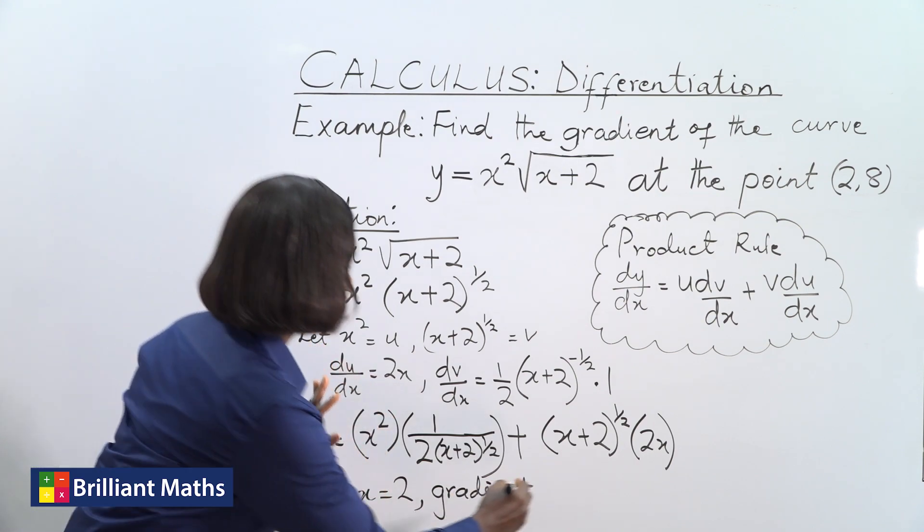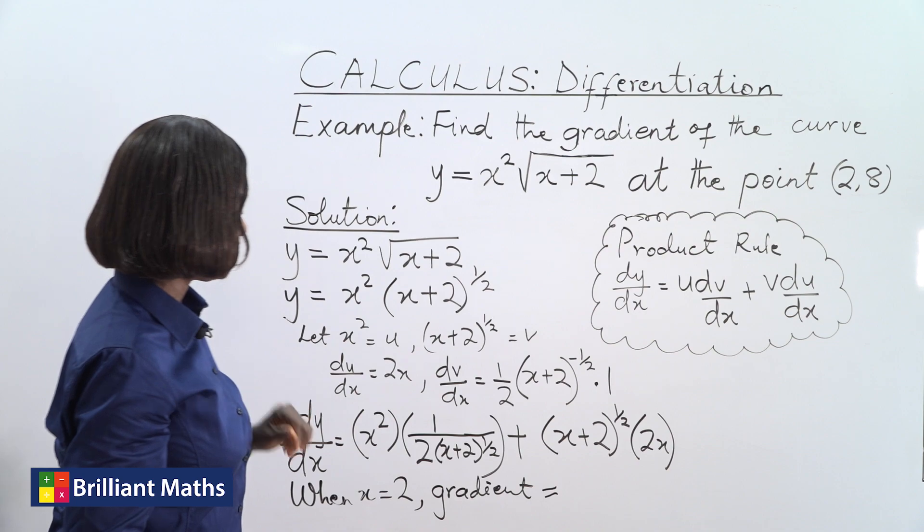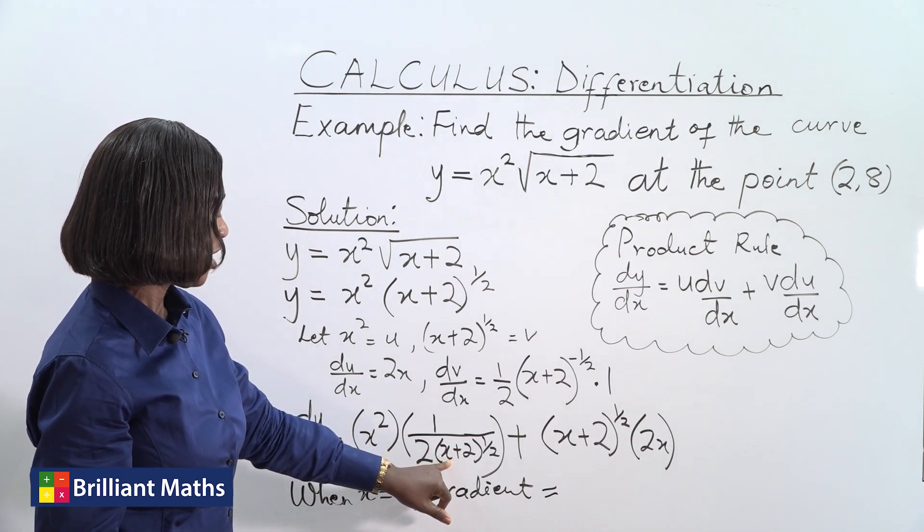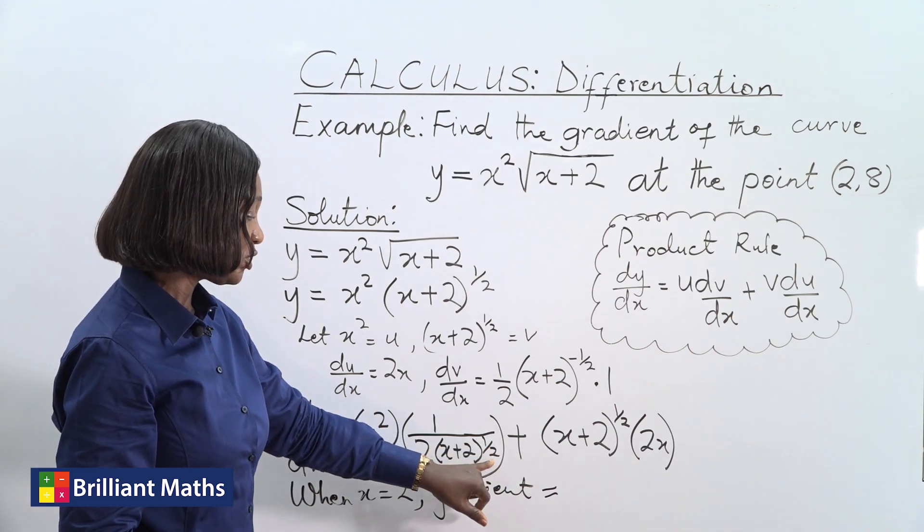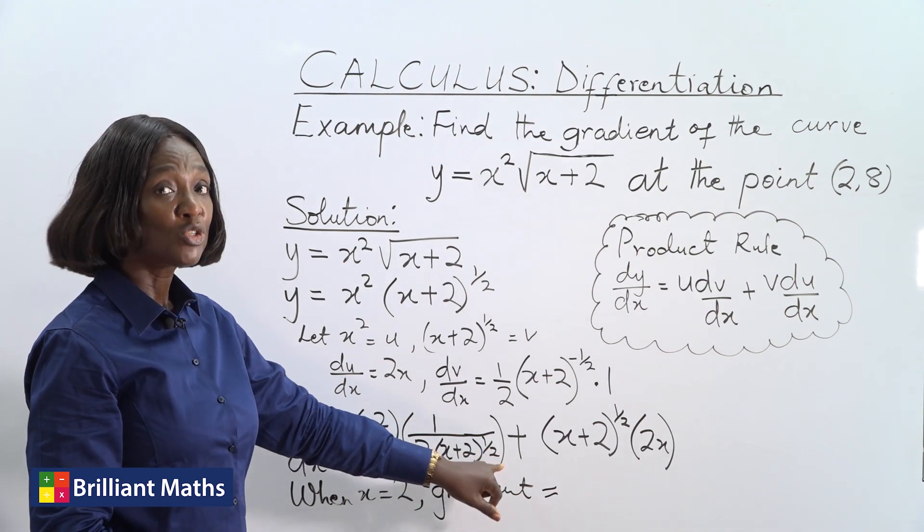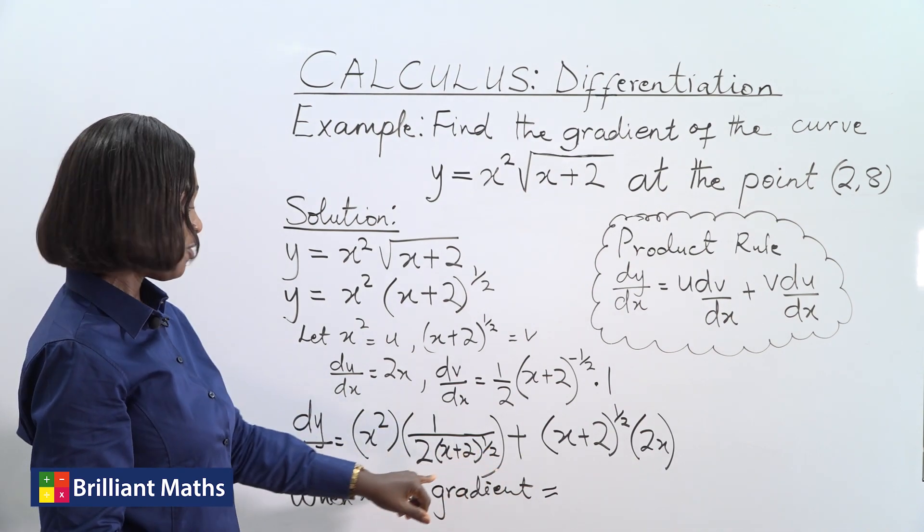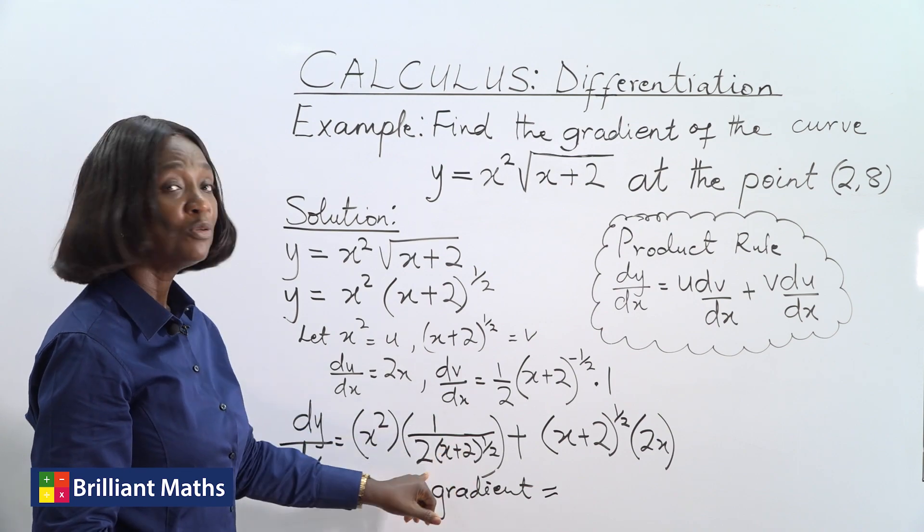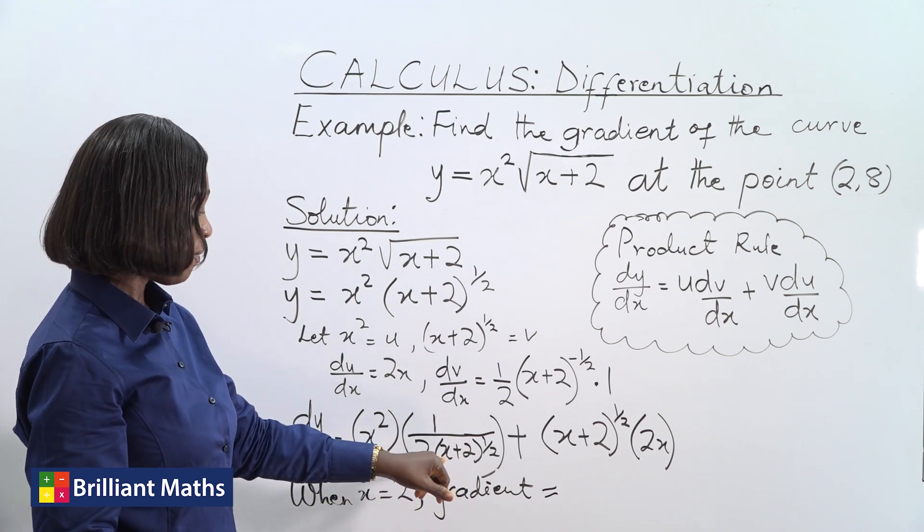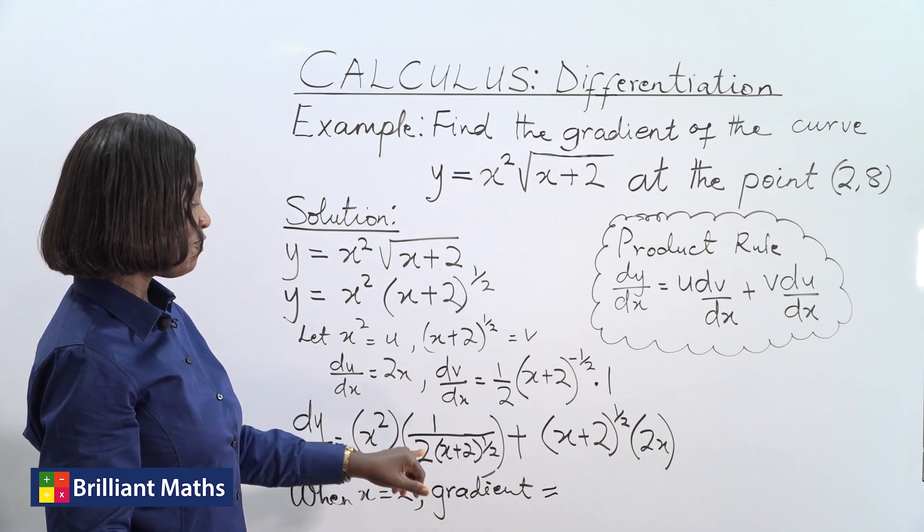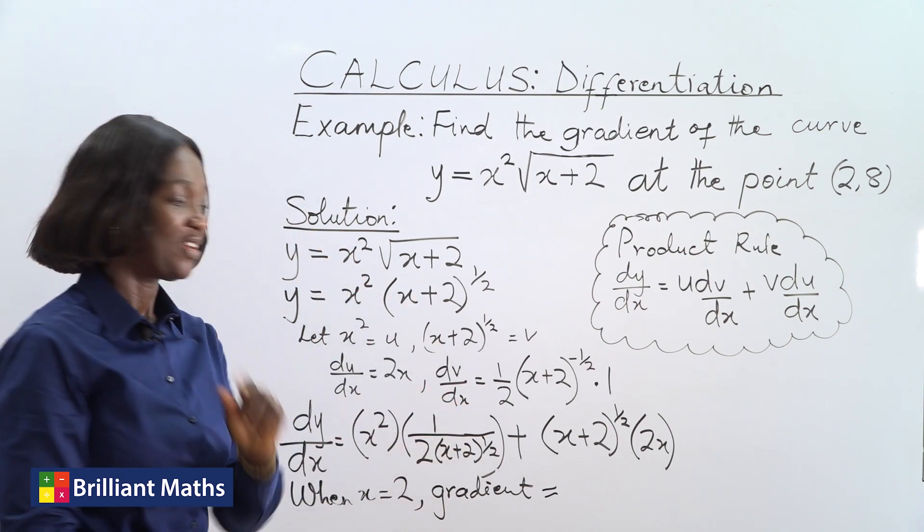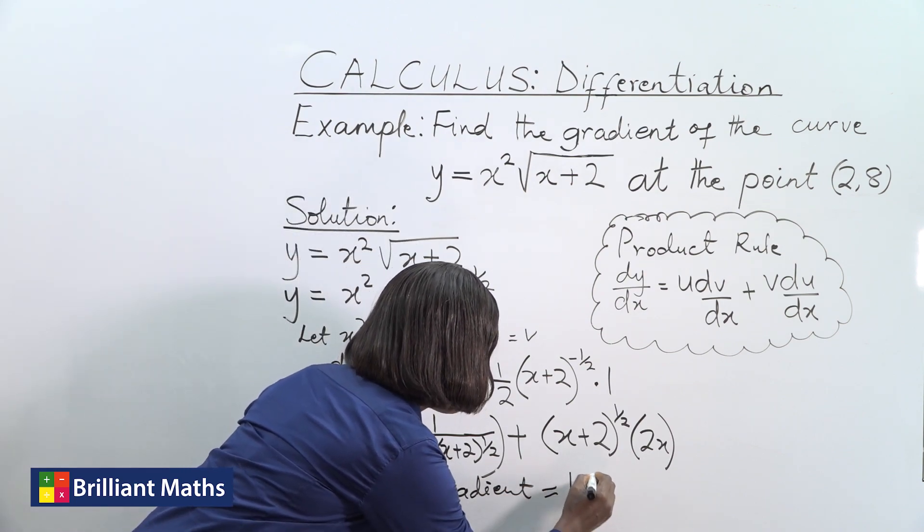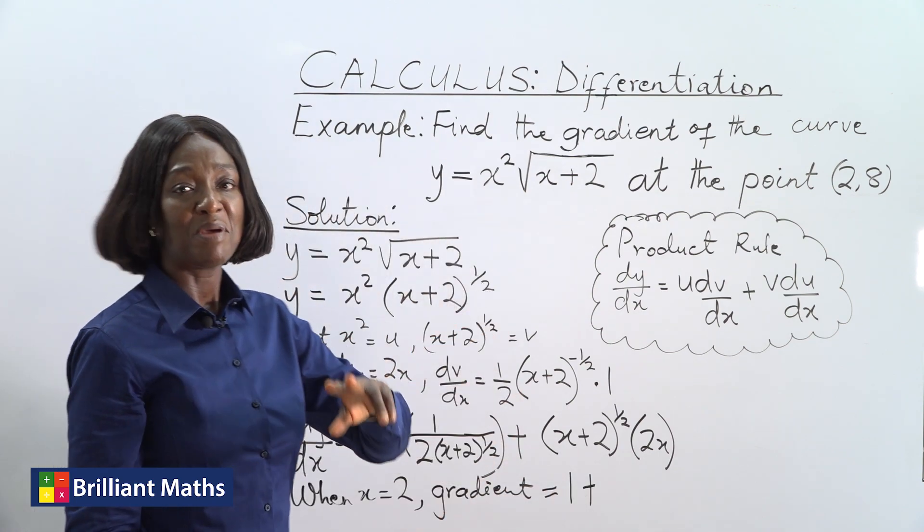2 squared is 4. x is 2 here, 2 plus 2 is 4, and the square root of 4 is 2. And then we have 1 over 2 times 2, so that becomes 4. 4 over 4 will give us 1. So from this expression, we have just 1. So that is 1 plus... Remember that x is 2.